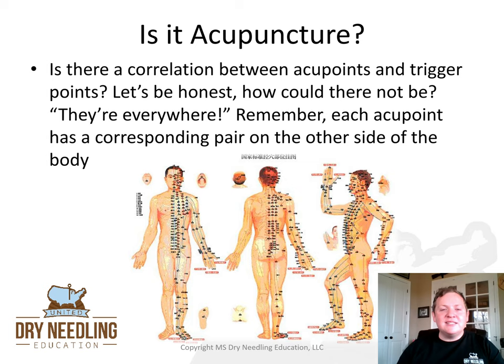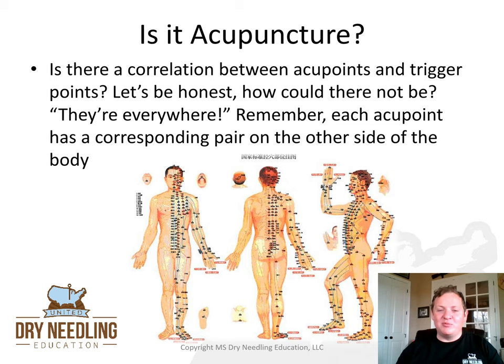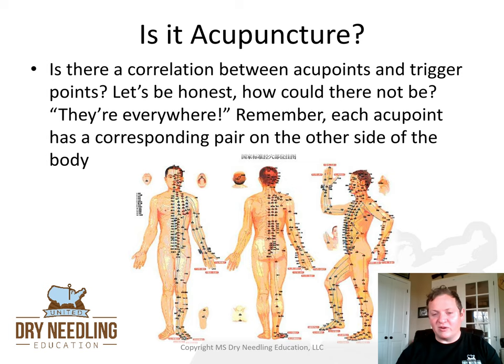Is there a correlation between acupoints and trigger points? Well, how could there not be? They're just everywhere. Each acupoint has a corresponding pair on the other side of the body — every dot on an acupoint chart has a match on the opposite side. I can understand why acupuncturists get concerned about non-acupuncture clinicians sticking needles in the body. They believe that wherever I needle — say, the lumbar paraspinals — I'm hitting an acupoint that affects something I know nothing about.